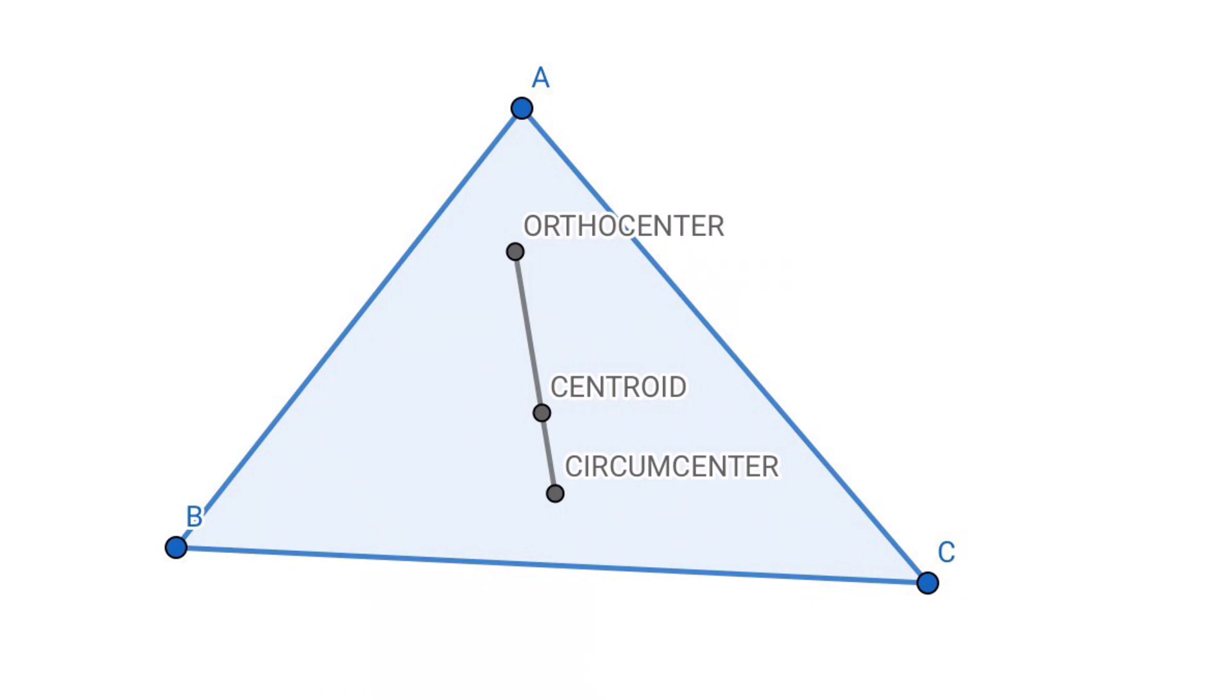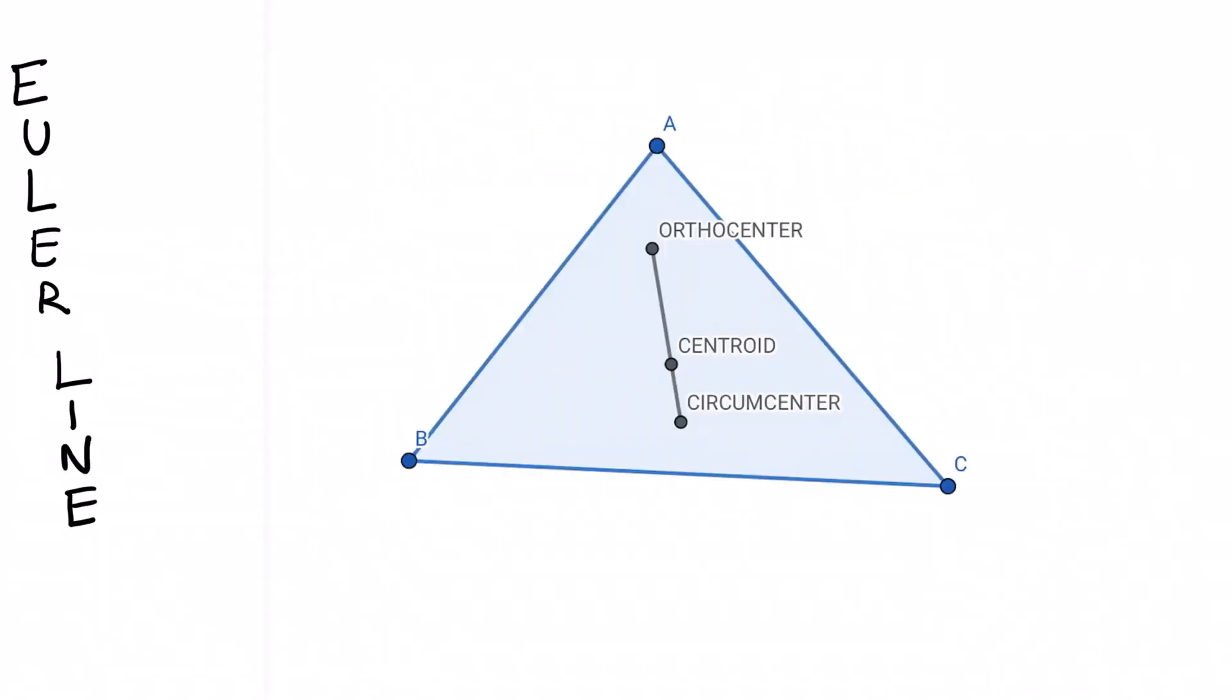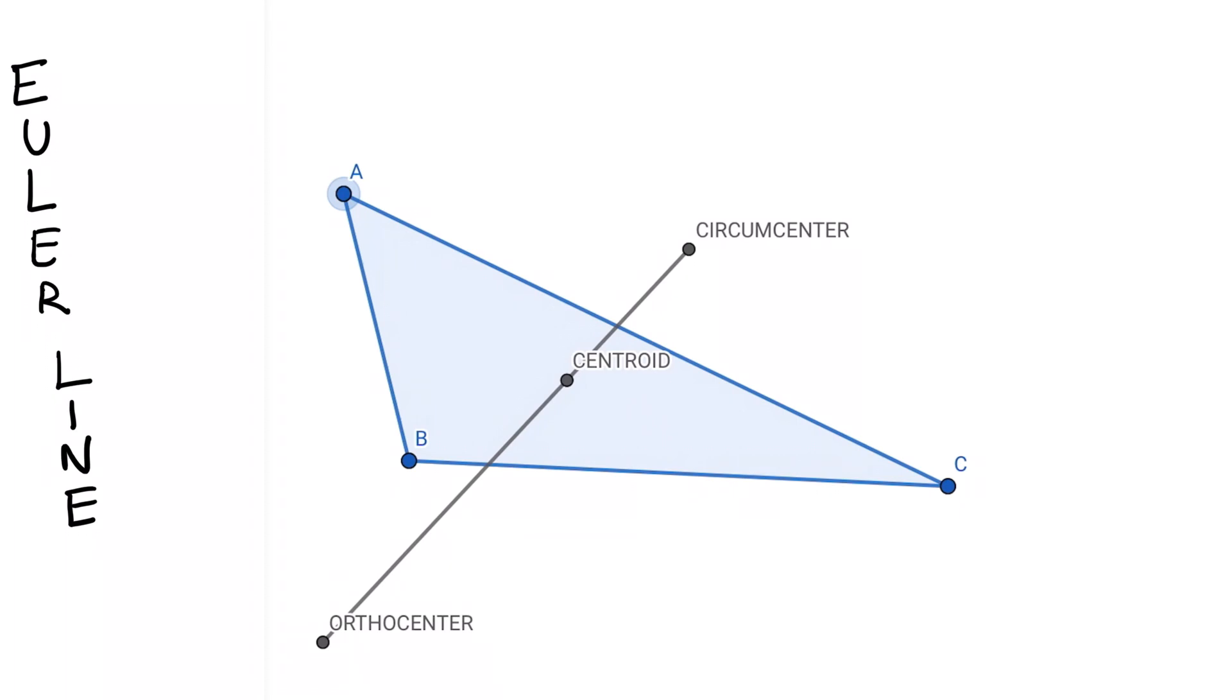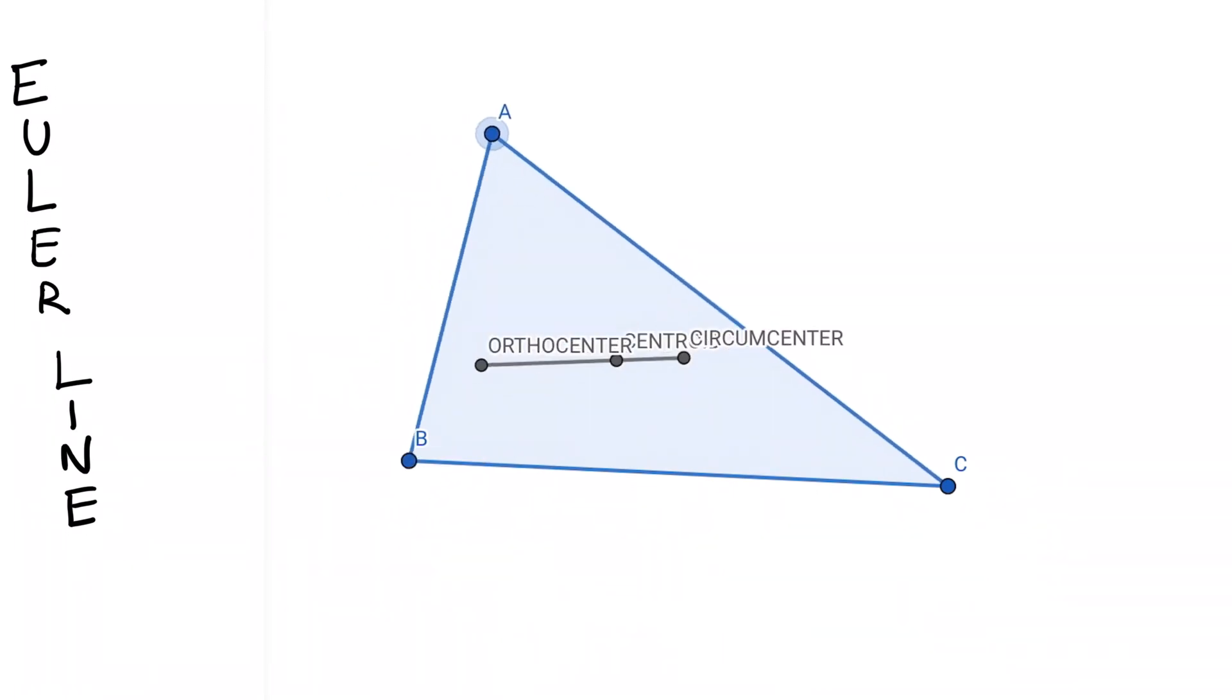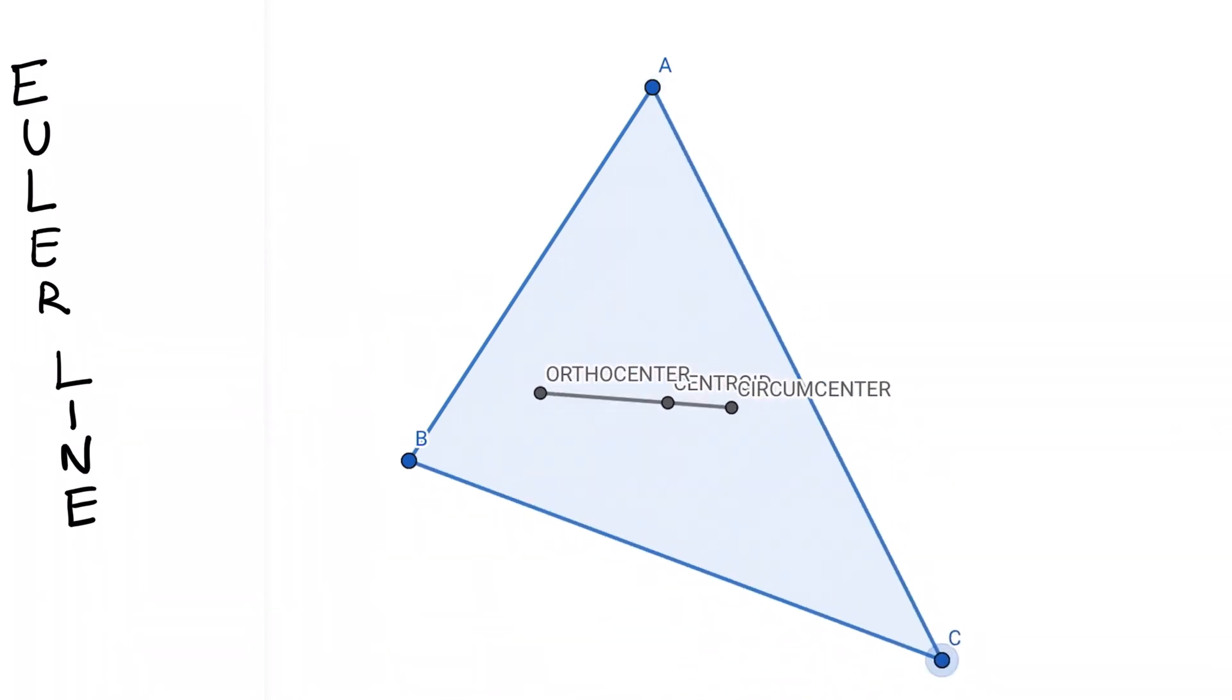Now let's join all these three points. We know that the orthocenter, centroid, and circumcenter are coincident - they lie on the same line. This is the Euler line. Now let's see how these points are aligned if we change the shape of the triangle.